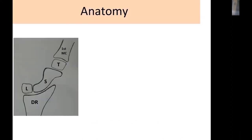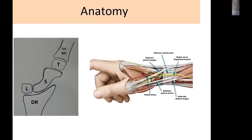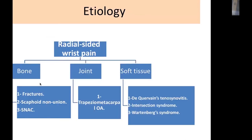On the radial side of the wrist, pain can originate from bone — the distal radius, lunate, scaphoid, trapezium, or first metacarpal — from the joint (trapezio-metacarpal joint), or from soft tissue. Common causes include fracture, scaphoid non-union, SNAC wrist, trapezio-metacarpal osteoarthritis, lateral band pathology, tenosynovitis, intersection syndrome, or Wartenberg syndrome.